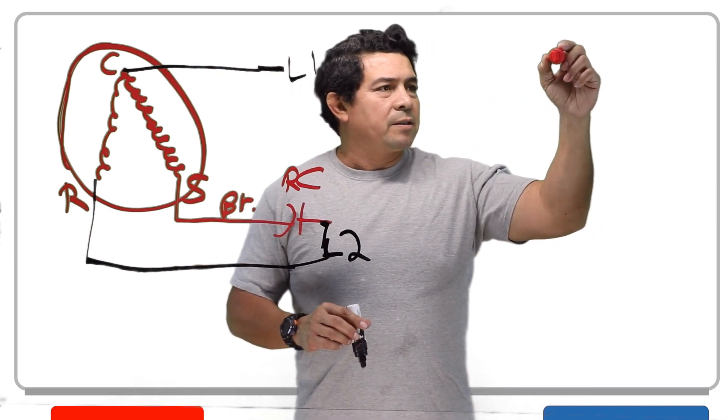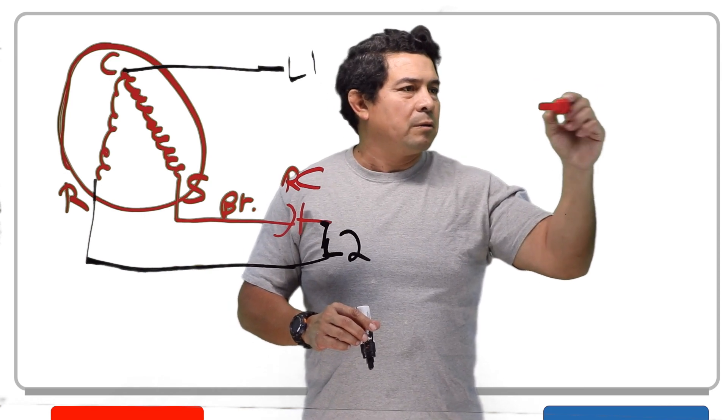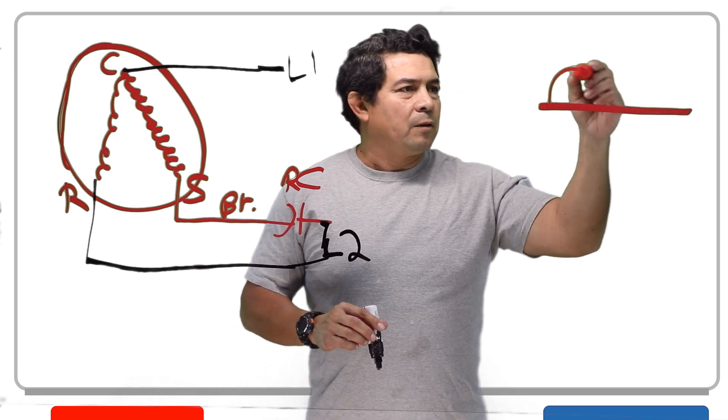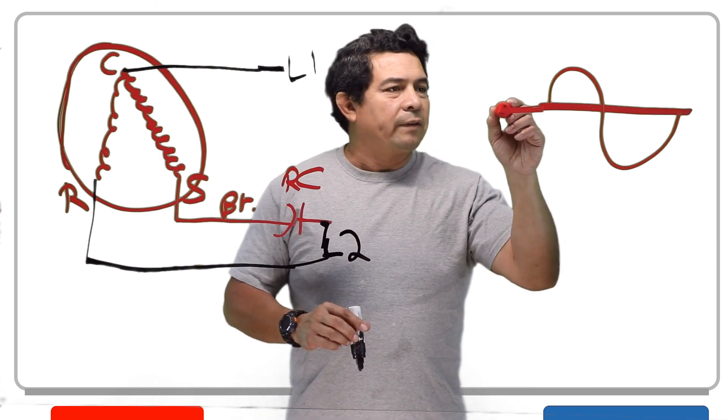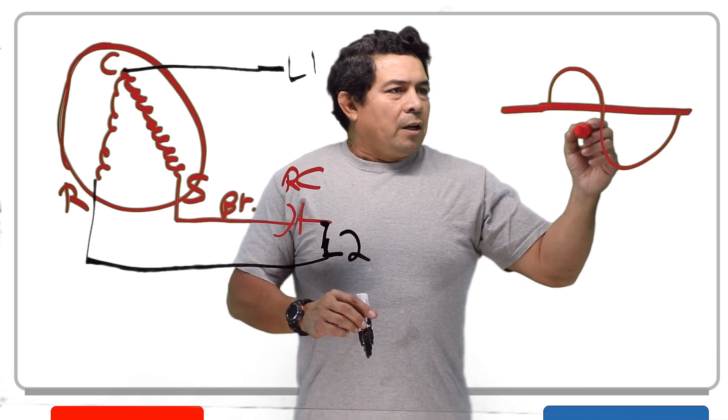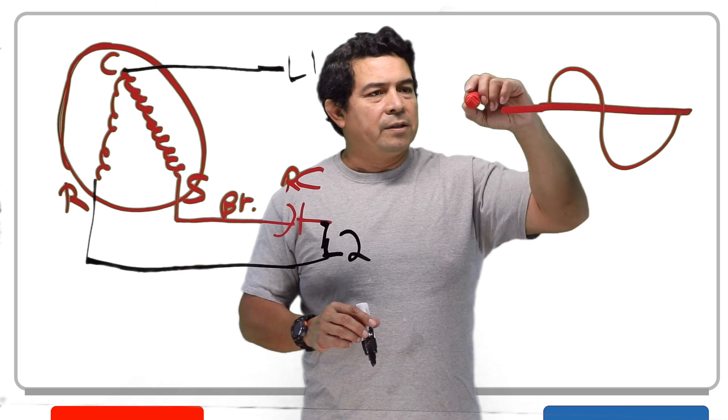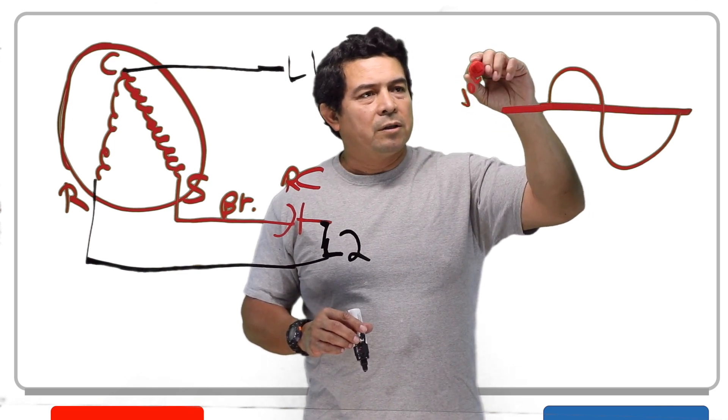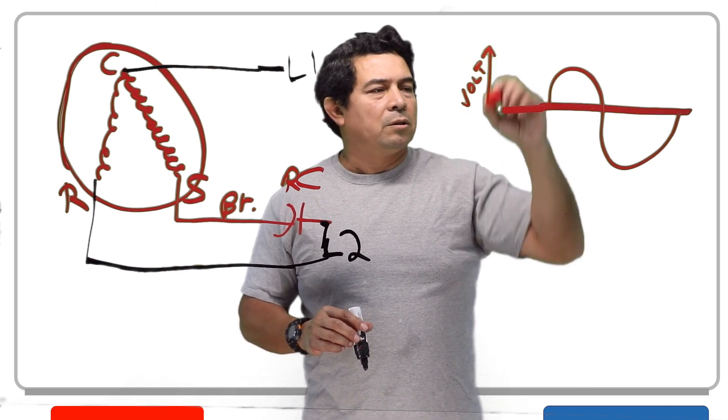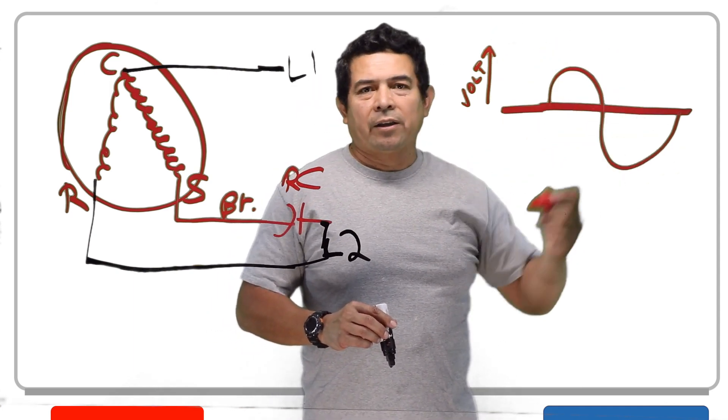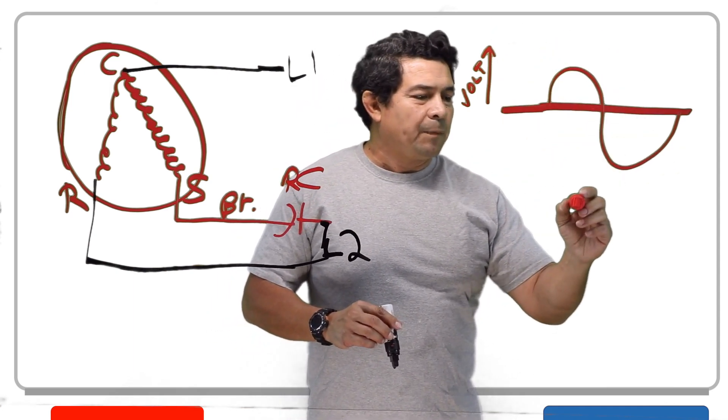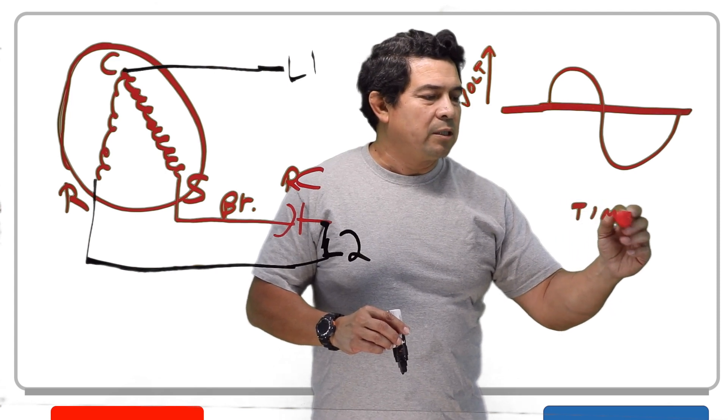We know that we have seen this many times in books. We know that that is our sine wave, that is our sine wave like this. So now, this right here, in this example, is going to represent my voltage. My voltage, higher voltage on this side. So the higher this goes, the higher the voltage you're going to have. And then this is going to be time.